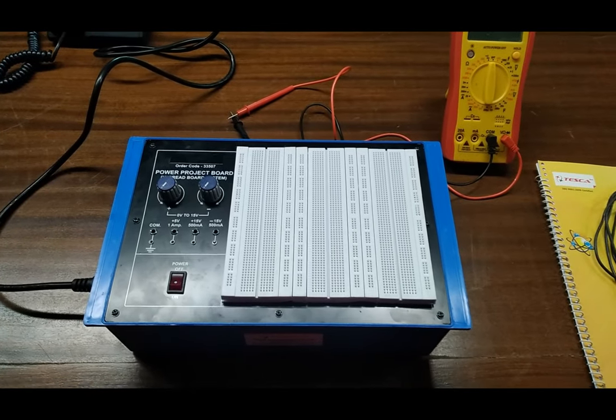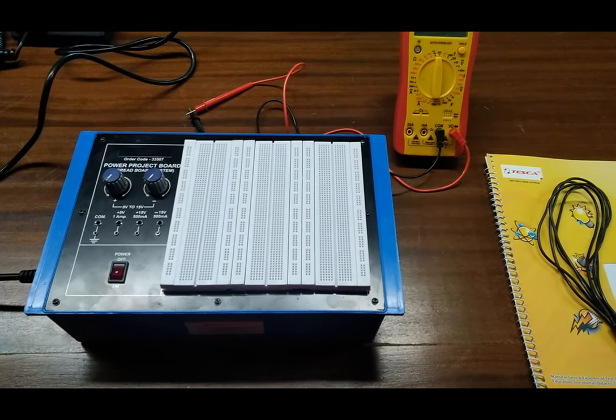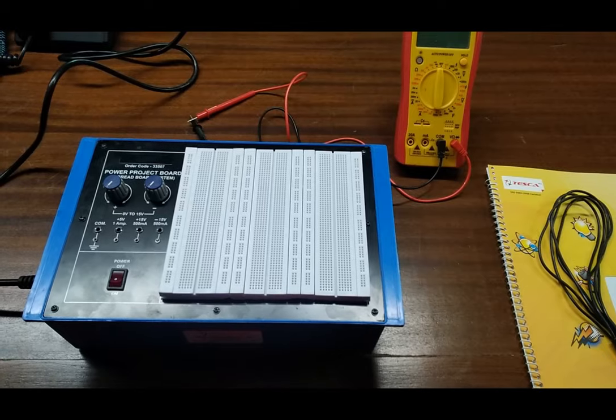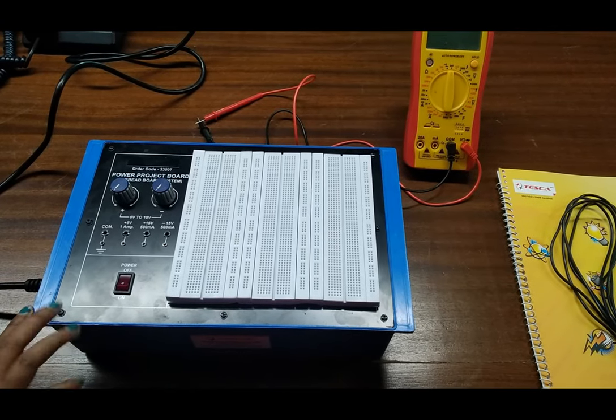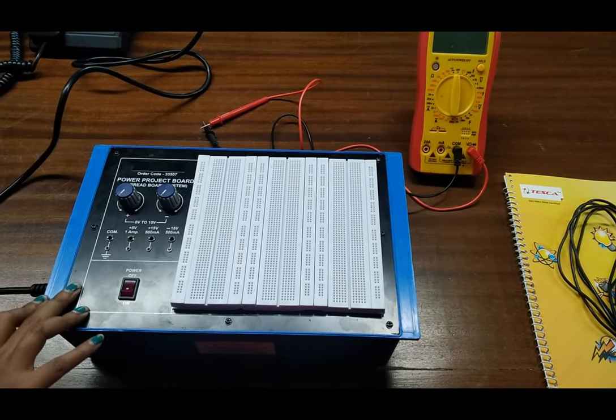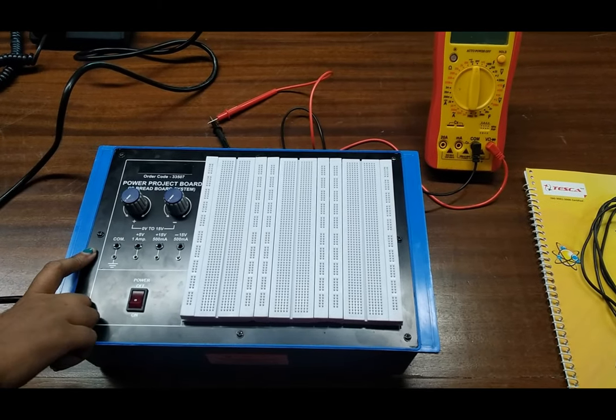Today we are going to show you our power project board IC breadboard system, order code is 33507. This is our trainer, this is the training kit. There are three power supplies given. This is the common terminal.